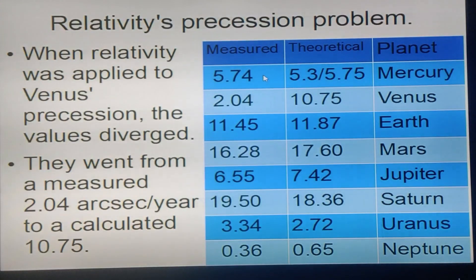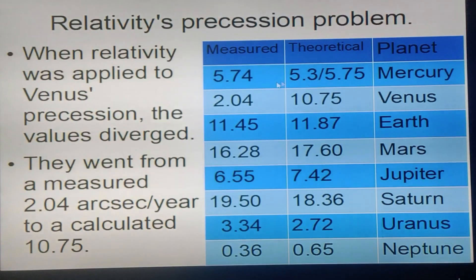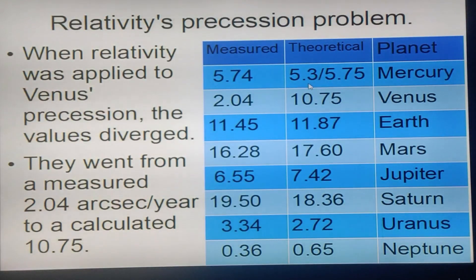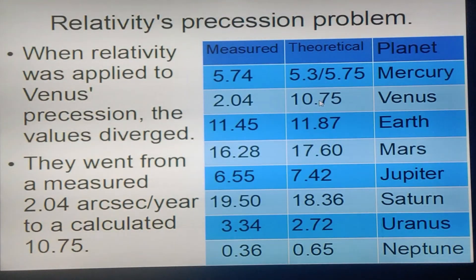Mercury's precession was measured at 5.74 arc seconds per year. According to Newton it was 5.3, and with Einstein's relativity it became 5.75 — excellent agreement with the measured 5.74. The problem is when you apply relativity to the precession of Venus, the values diverge. Venus's precession was measured at 2.04, but according to relativity it should have been 10.75 — theoretically about five times greater than what was measured.